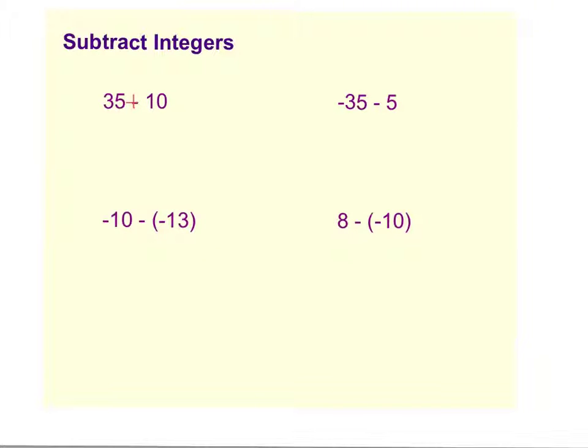So we're going to add, so there's our plus and then the opposite, so we're going to take this 10 and we're going to make it a negative 10. So now we have a 35 plus a negative 10. We're adding two integers with opposite signs so we actually will subtract.